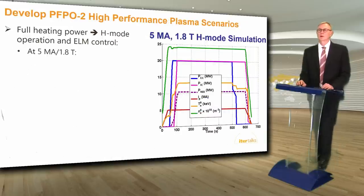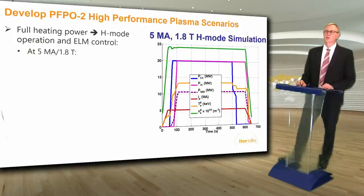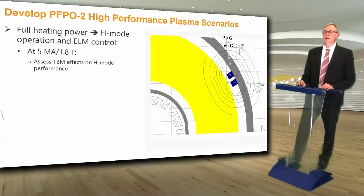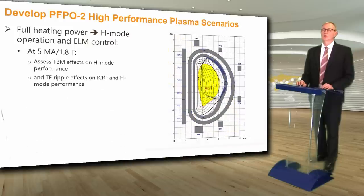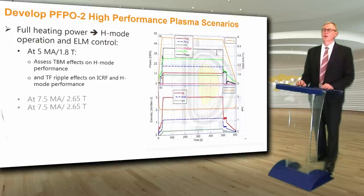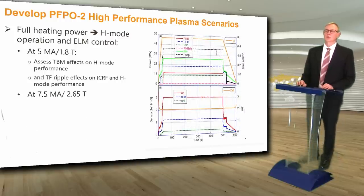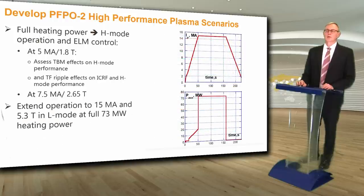The full heating power in PFPO2 will allow H-mode operation and ELM control first at 5 megamps and 1.8 tesla. The effects of the test blanket modules on H-mode performance will be assessed and compared with earlier PFPO1 performance — including magnetic field perturbations due to ferromagnetic TBMs and higher toroidal field ripple at 1.8 tesla from ferromagnetic inserts. H-modes will then be established at 7.5 megamps and 2.65 tesla, and operation will extend to 15 megamps and 5.3 tesla in L-mode with the full 73 megawatts of heating power.